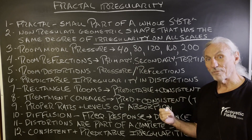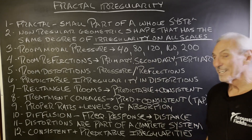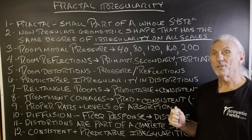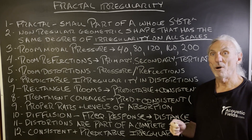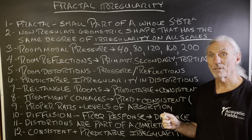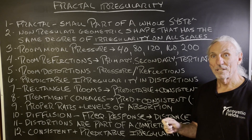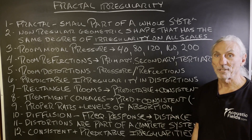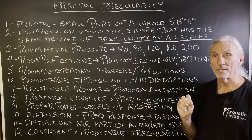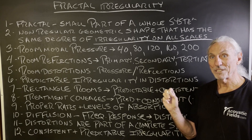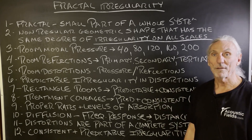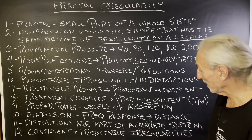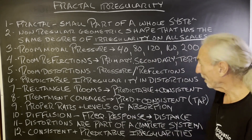That's what a fractal is — it's a small part of a bigger picture. And I think that's where people are missing the understanding of acoustics. They don't understand that there are a lot of small parts contributing to larger issues. A fractal is a small part; it's irregular, but it's predictable and consistent in its irregularity. That's what we have to understand about room acoustics: distortions are part of a complete system, consistent and predictable throughout the whole room.